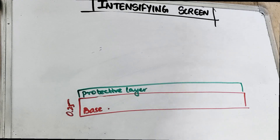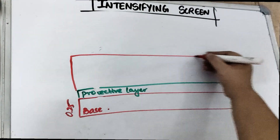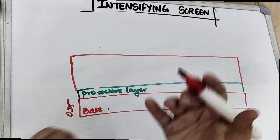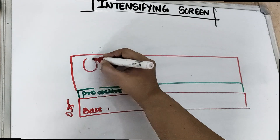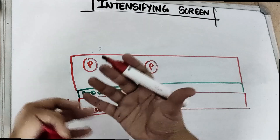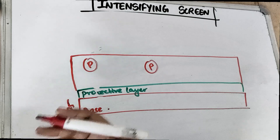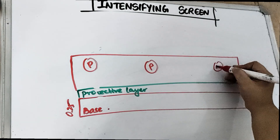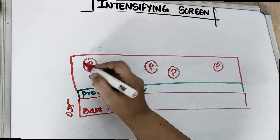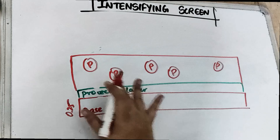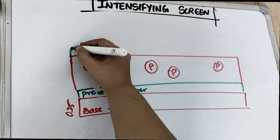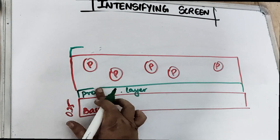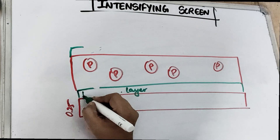Above the base, we have the phosphor layer. The phosphor crystals have the property of luminescence — they are going to convert the x-ray radiation into light radiation. These phosphor crystals are floating, they are swimming inside a matrix which is made up of plastic — P for plastic, P for phosphor, very easy to remember. Above the phosphor layer, we have a protective layer. And below the phosphor layer, there is what we call the reflecting layer.